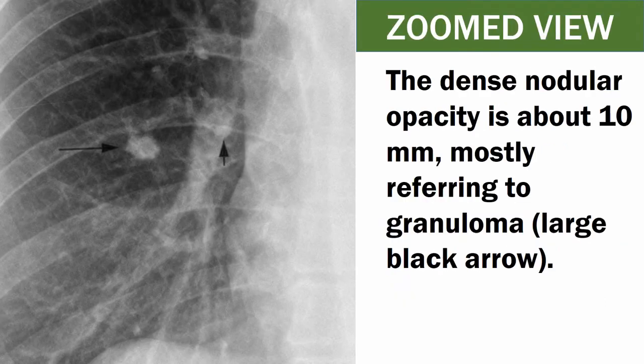This is the zoomed view of the previous x-ray. The dense nodular opacity is about 10 millimeters, mostly referring to granuloma, which is shown with the large black arrow.